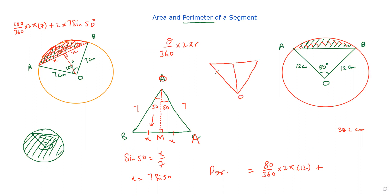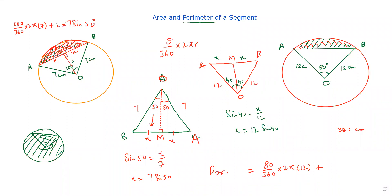This is 12, this is 12, and this angle was 80 degrees. So this angle is going to be 40 — half — because the line of symmetry is passing through point O. If you name this as X, you can say sine 40 equals X over 12, and X is going to be 12 sine 40. So there is 2 times this X, so the chord length is going to be twice 12 sine 40.